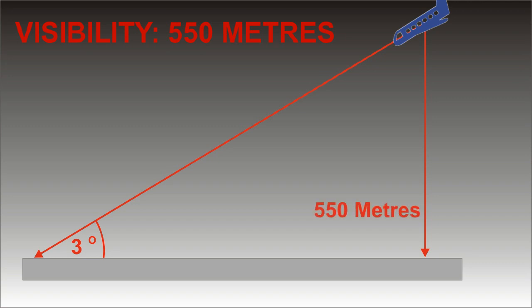If we are at 550 meters above ground level, which is just over 1,800 feet, the passengers will be able to see the ground. This is because the visibility is 550 meters, which is the same as the vertical height.